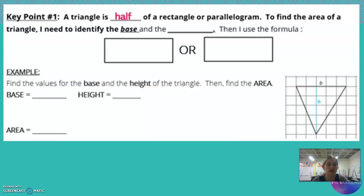So a triangle is half of a rectangle or parallelogram. To find the area of a triangle, we need to identify the base and the height. Remember that the base and the height must form a right angle. So you can see in our example down here, we have our base, and our height is on the inside. It goes from the base to the very tallest point in the triangle.